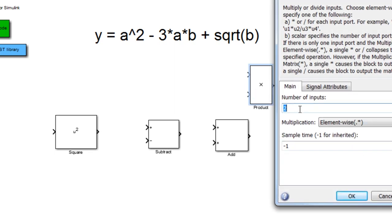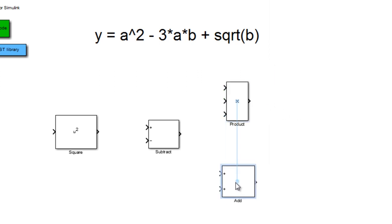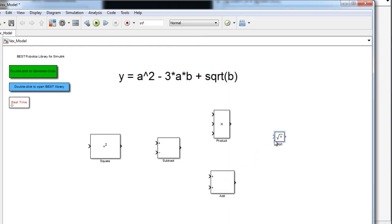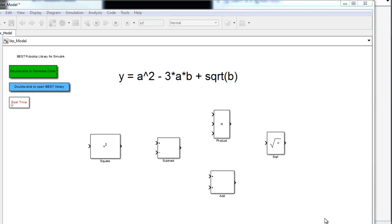The last operation in the algebraic equation is square root. Let's go back to the math library and find the square root block, then drag and drop it into the model. The square root block will have one input, which is the value B. We have now added all the operation blocks needed for this equation.